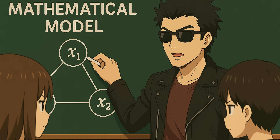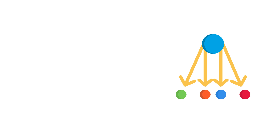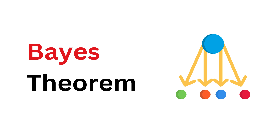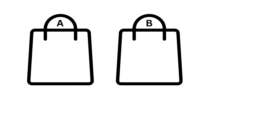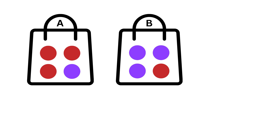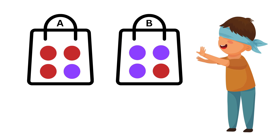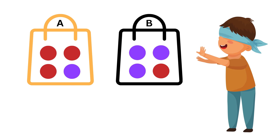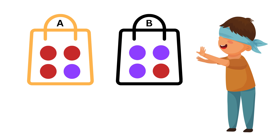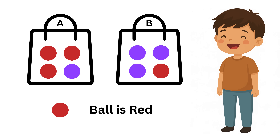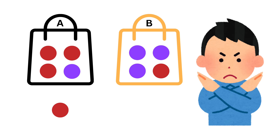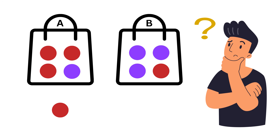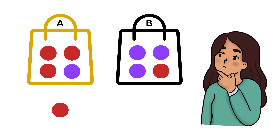Now, before we start building our model, let us first understand the core idea behind a well-known probability concept called Bayes' Theorem, which will help us develop our model. Imagine you have two bags placed in front of you. Bag A has three red balls and one blue ball. Bag B has one red ball and three blue balls. Someone blindfolds you and randomly picks one of the two bags, so each bag has a 50% chance of being selected. From the selected bag, one ball is picked at random and it turns out to be red. You are told the chosen ball is red, but you still don't know which bag it came from.